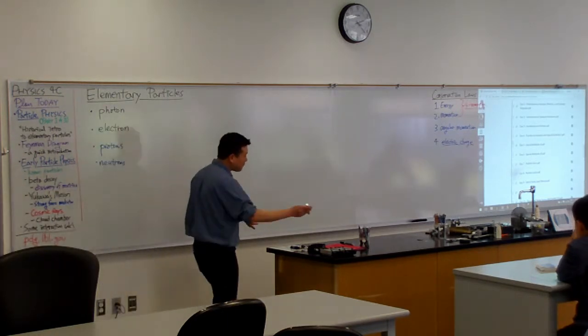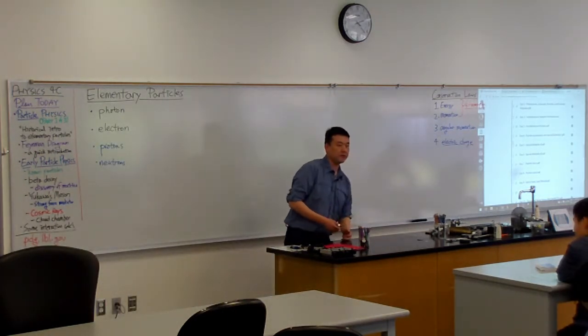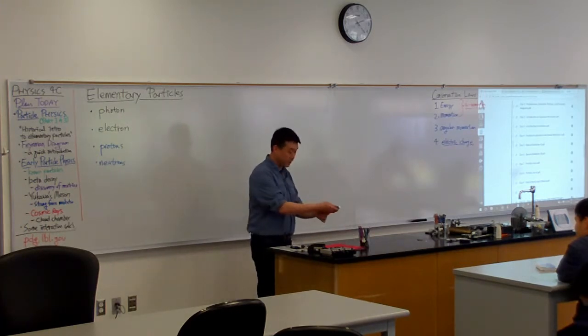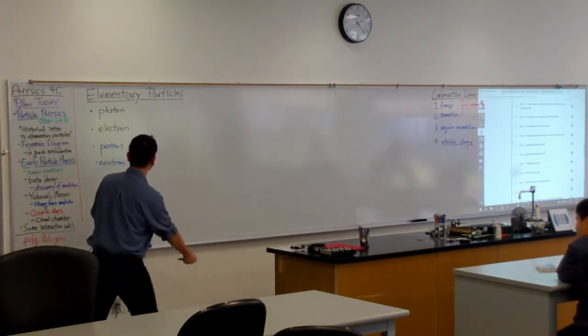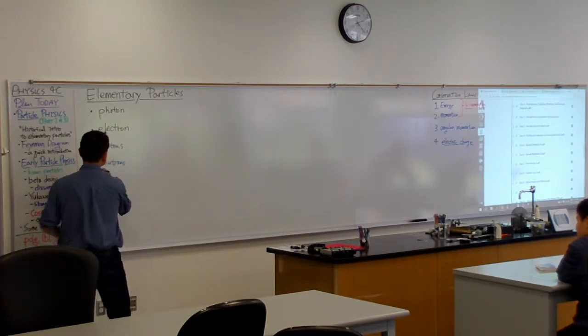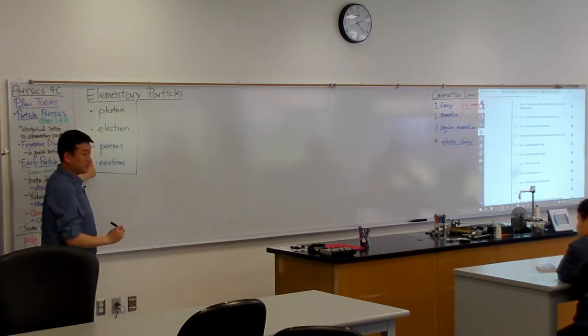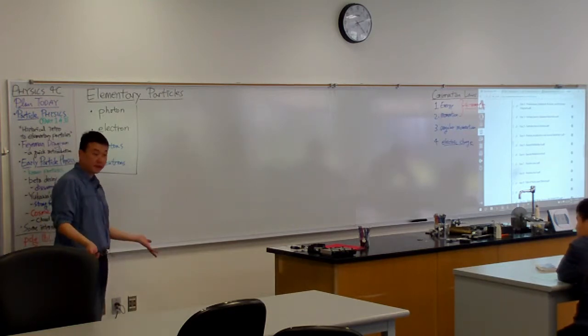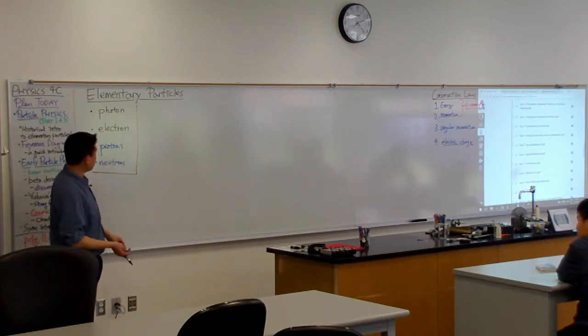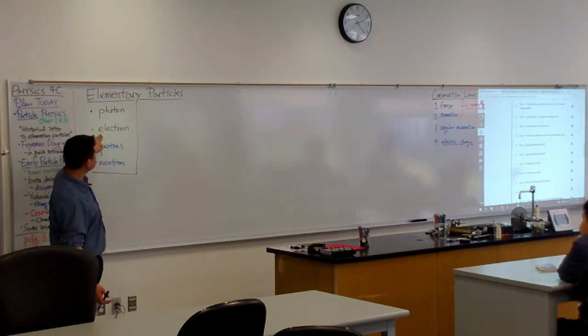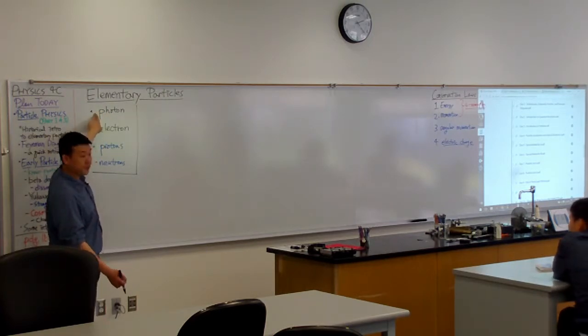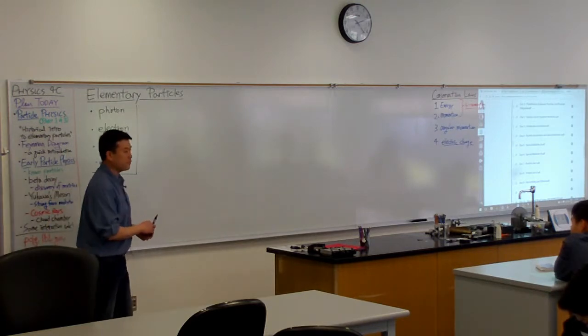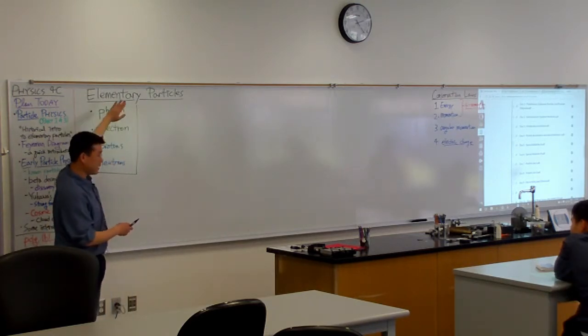So if you are a particle physicist living in the 20s and 30s, 1920s and 30s, this was your world. These were all the particles that you know. And your kind of starting assumption is that everything else is made up of this. All the atoms are made up of protons, neutrons, and electrons. All the interactions that you see, it's a result of a photon, electromagnetic interaction.